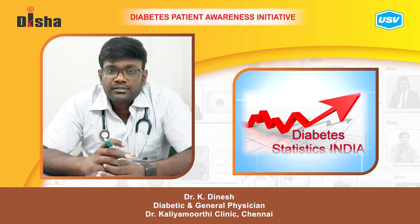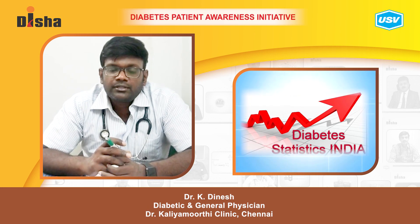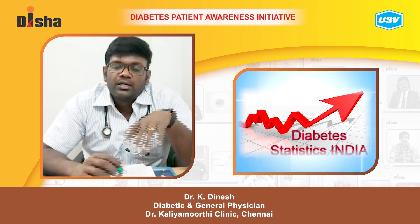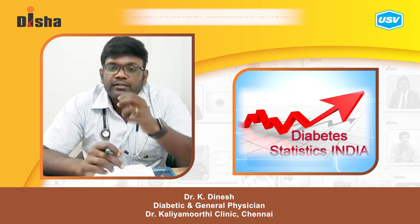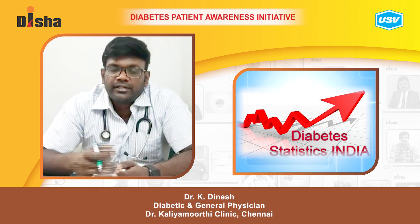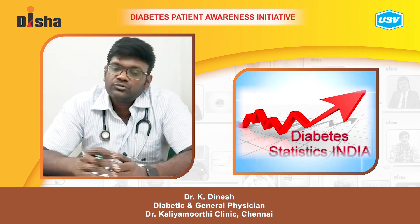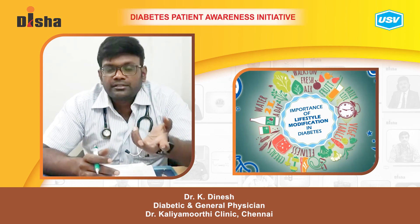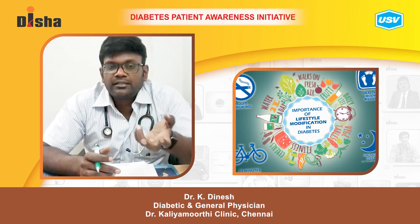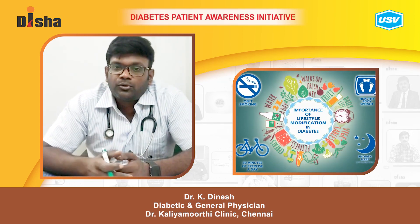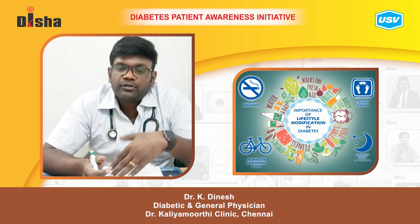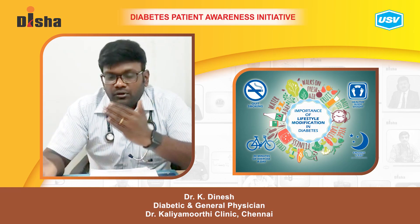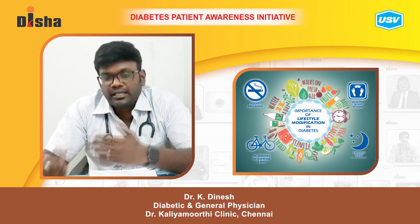The BMI of the Indian population is much higher compared to the western population, and the hip-waist ratio of the Indian population is also much higher. A little modification in lifestyle can help bring diabetes under control and reduce the risk of transferring it to the next generation.